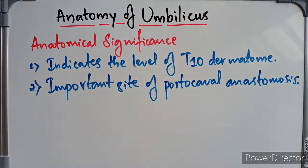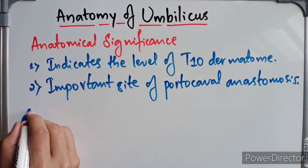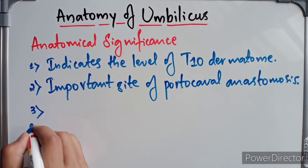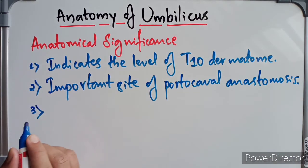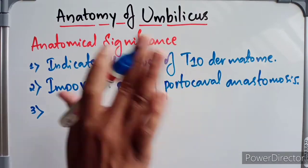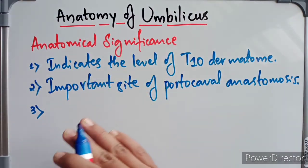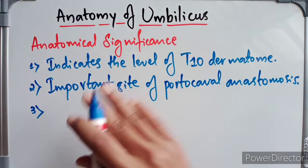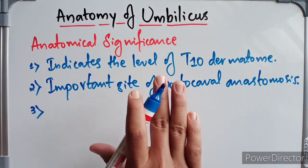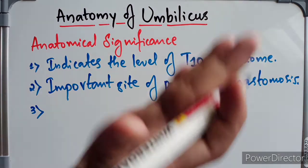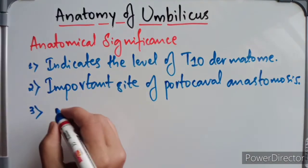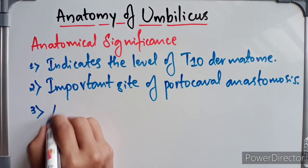The level of the umbilicus serves as a watershed line for venous and lymphatic drainage. Above the level of the umbilicus, drainage flows upward; below the level of the umbilicus, drainage flows downward.